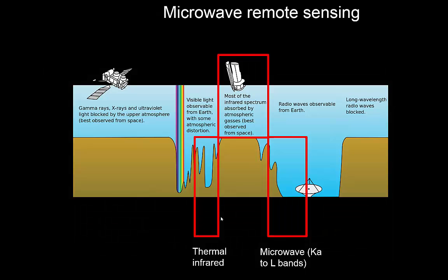Alright, so microwave remote sensing. As I said, there's a separate video on that, but the main thing to remember is we've got the thermal infrared region, and then a big part of the spectrum is not really used for space-based remote sensing because the atmosphere absorbs pretty much all the radiation. At some point at a lower frequency, we start to get a signal of emitted radiation from the earth again — and that's where most passive and active methods focus, because that's also where you lose the least energy when emitting active radiation.